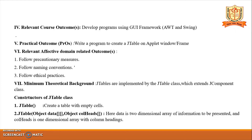Minimum theoretical background: JTable is implemented by the JTable class, which extends JComponent class. There are two constructors of JTable class. The first is a default constructor that creates the table with empty cells. The second constructor has two parameters: data, a two-dimensional array of information to be presented, and column heading, a one-dimensional array with column headings.